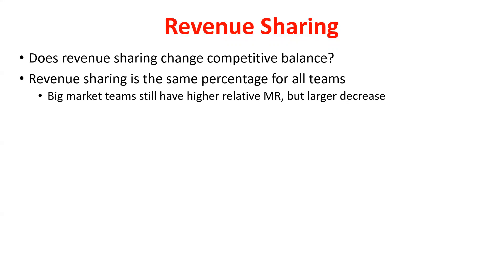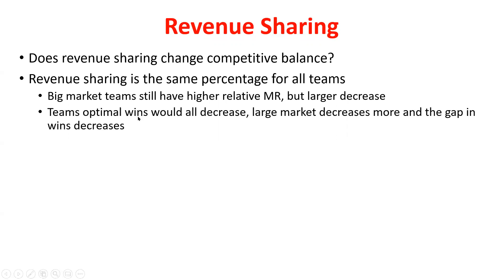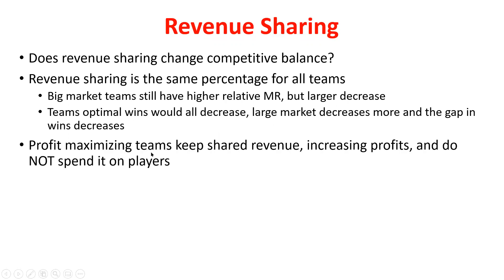If I take 50% of a hundred, that's a lot more than 50% of two. So we're going to see a much larger shift for those large market teams — they're going to be paying in more than they're going to be receiving. So hopefully this improves competitive balance. We talked about this could shift the optimal number of wins down for both teams, but more for the large market team, bringing that gap closer together. Also, if teams are profit maximizing and they get this additional revenue from the league, they're just going to pocket that additional revenue to increase profits.